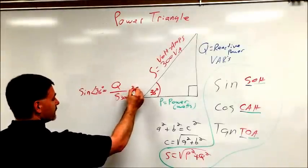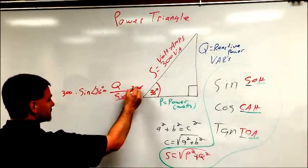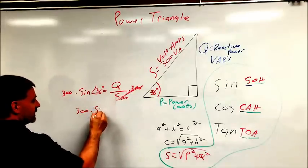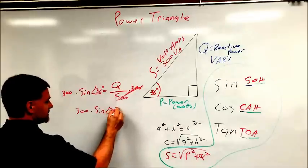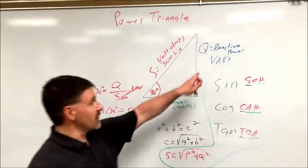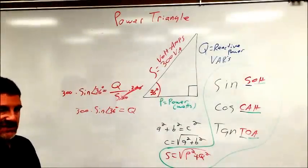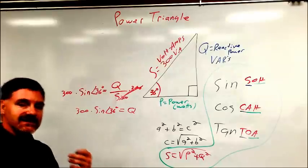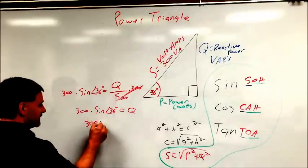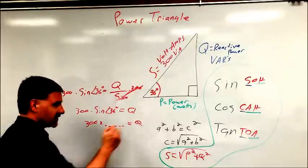To do that, we multiply our 300 on both sides because they will cancel. You now have 300 times the sine of angle 36 degrees equals Q. That's how you'll solve what the var value is. But recall, it's not 300 times 36. It's the sine value, or a decimal value. So it's going to be 300 times a decimal value of something to equal Q.